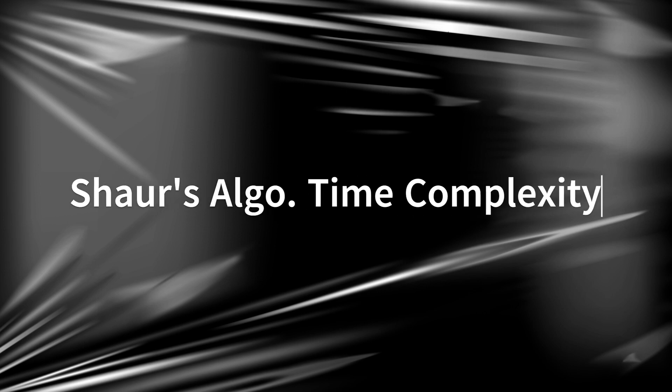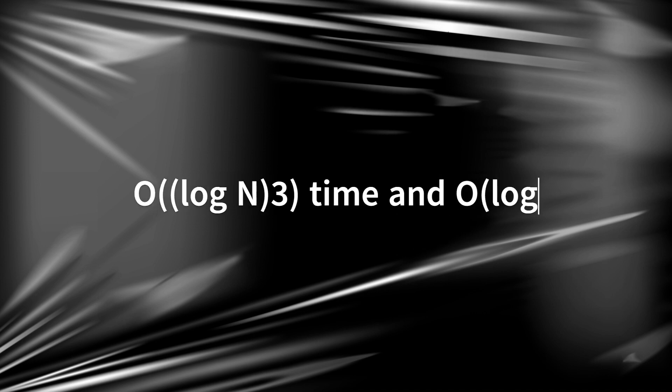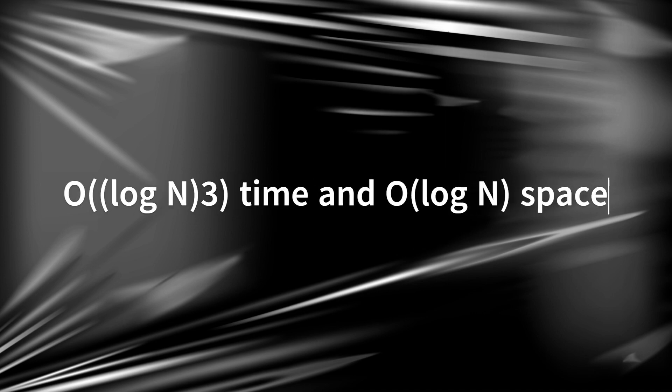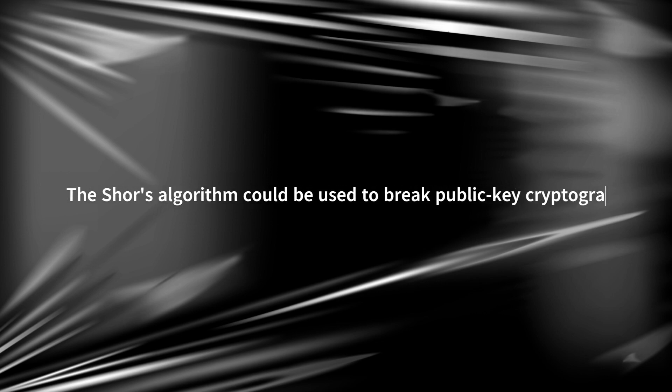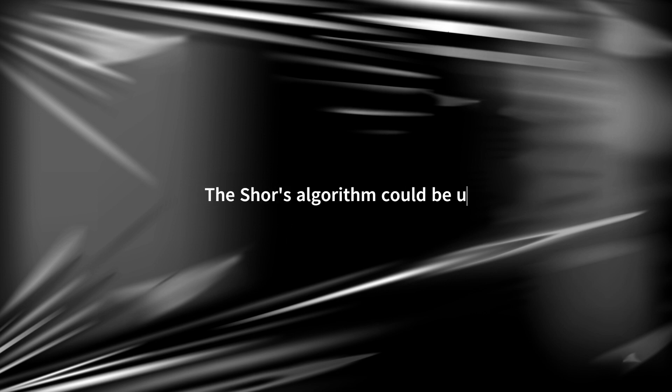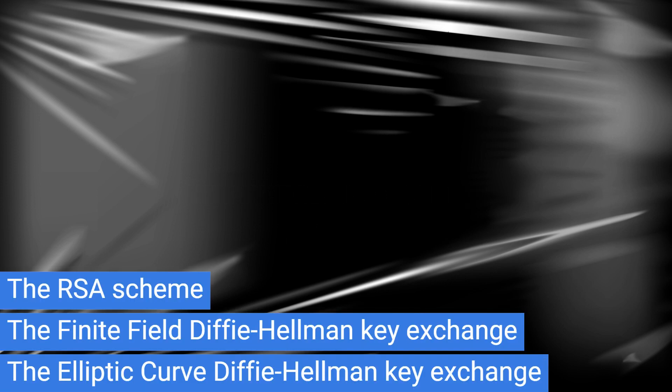To factor an integer N, Shor's algorithm would take polynomial time O(log N) in the size of the integer. Shor's algorithm could be used to break public key cryptography schemes which are fundamental to modern cryptography, such as RSA, finite field Diffie-Hellman key exchange, and elliptic curve cryptography.